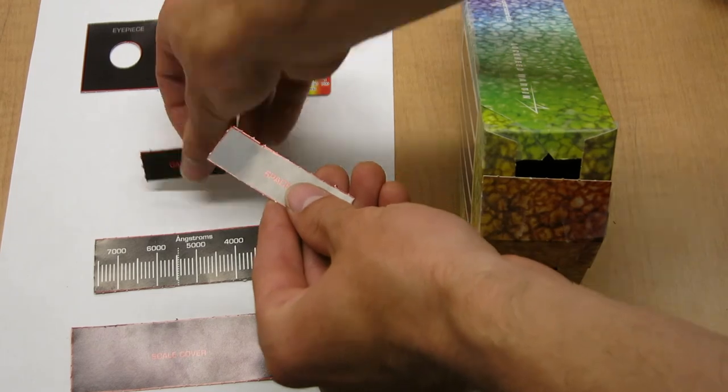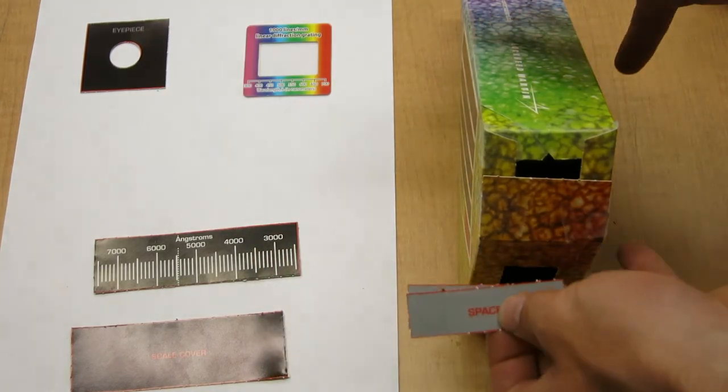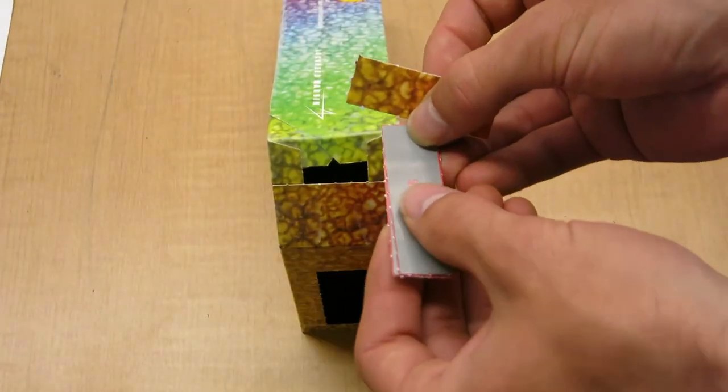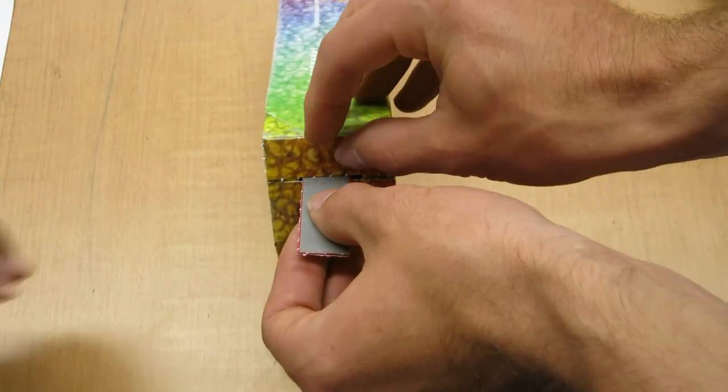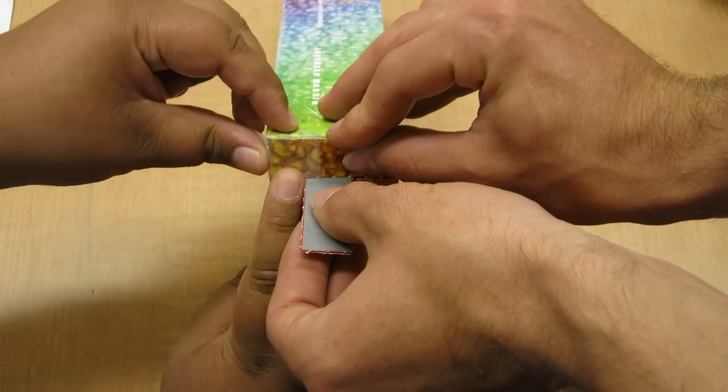Now we'll create the entrance slit. Use two spacers stacked on top of each other to set its width. Once you have it set at the right width and parallel, tape it down.